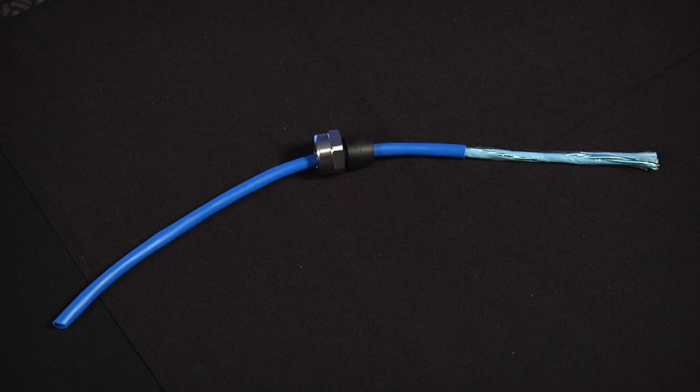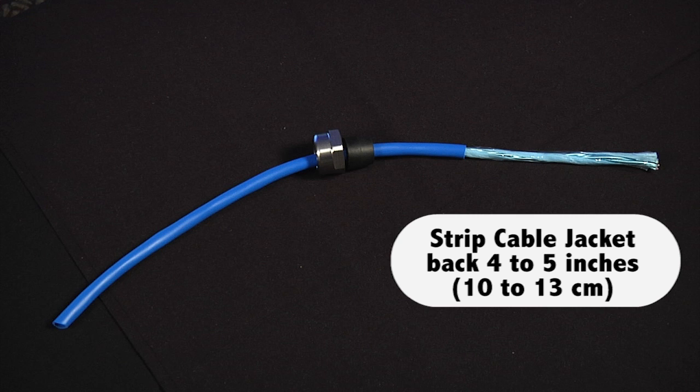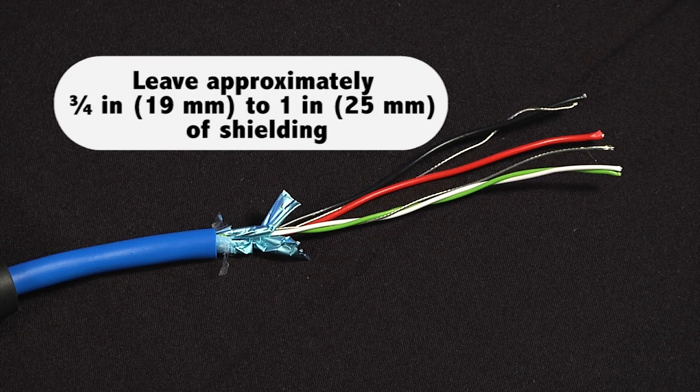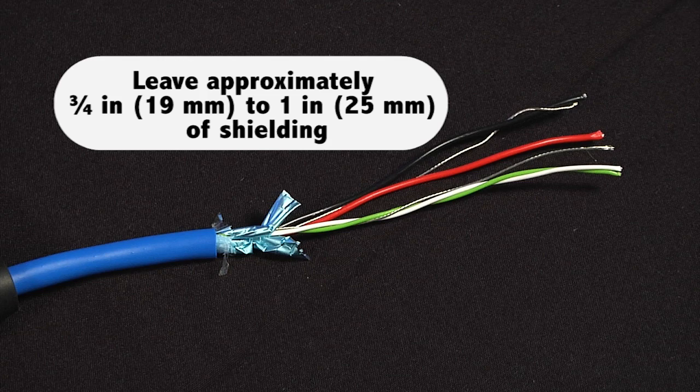The first thing you need to do is strip the cable jacket back to expose the wires. Trimming it 4-5 inches is sufficient. You can remove the clear wrap and wire filler around the wires, but don't cut back the shield all the way. You will want to leave a bit less than an inch of this shielding behind.